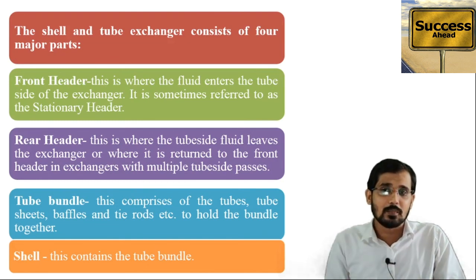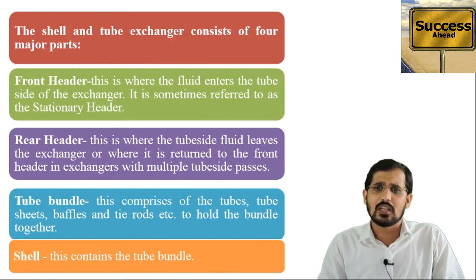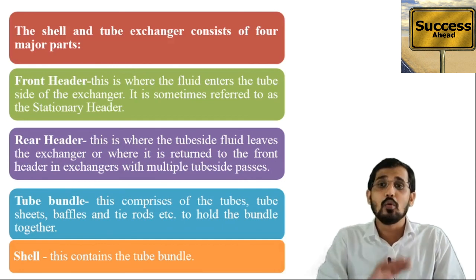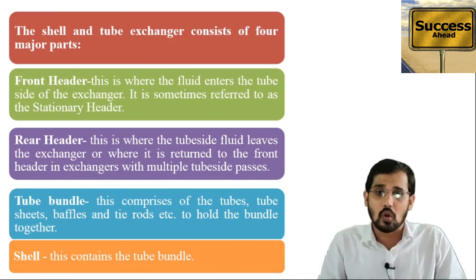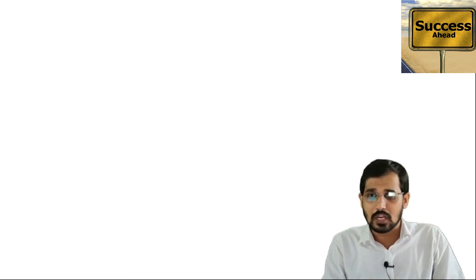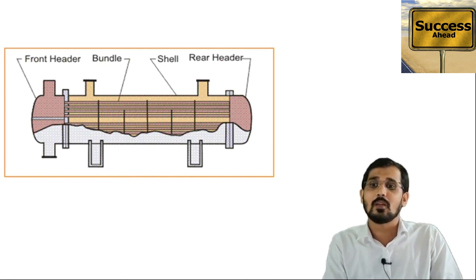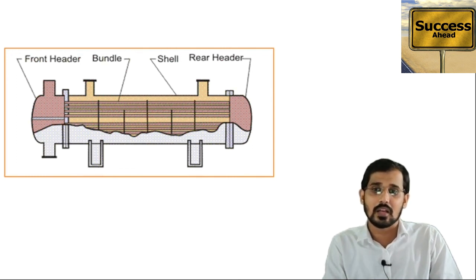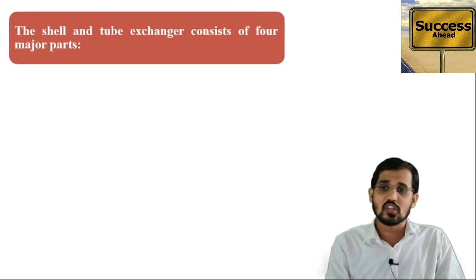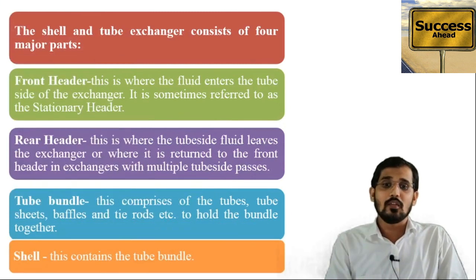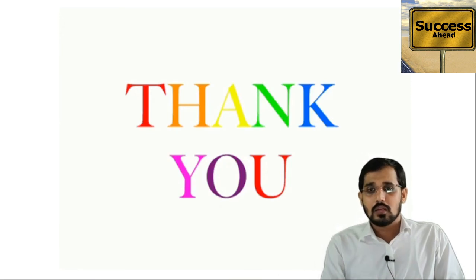The tie rod separates the tube bundles. The shell is the outer part of the shell and tube heat exchanger in which various tubes are installed. The outer part is the shell side, the inner parts are the bundles and tubes, and the two bundles are separated by the tie rods. The front header is where fluid enters and the rear header is where it leaves. This is all about the shell and tube heat exchanger — we will continue with the next topic in the next unit.